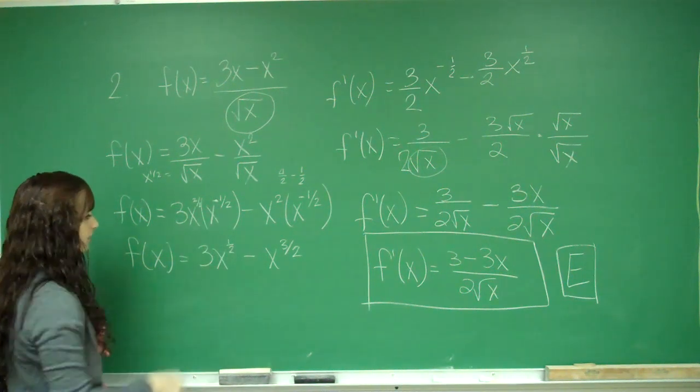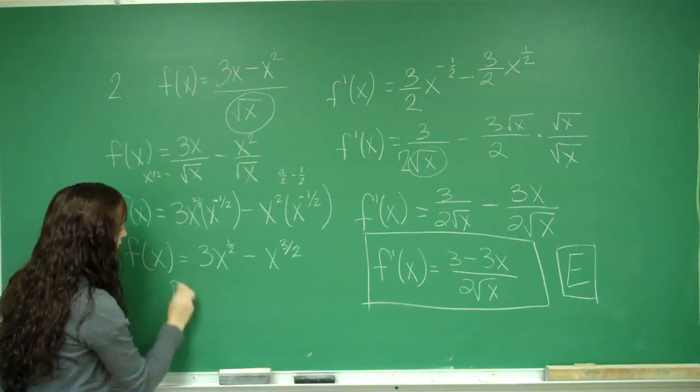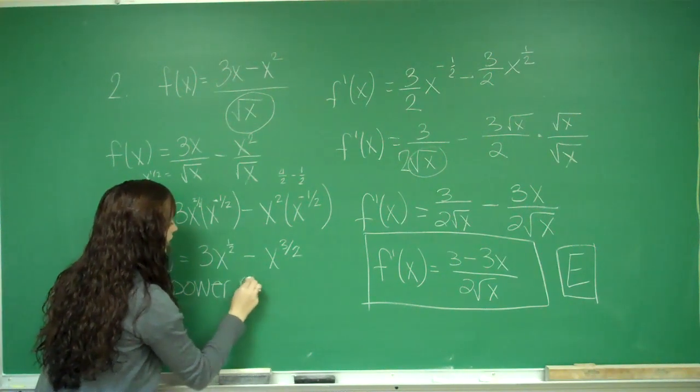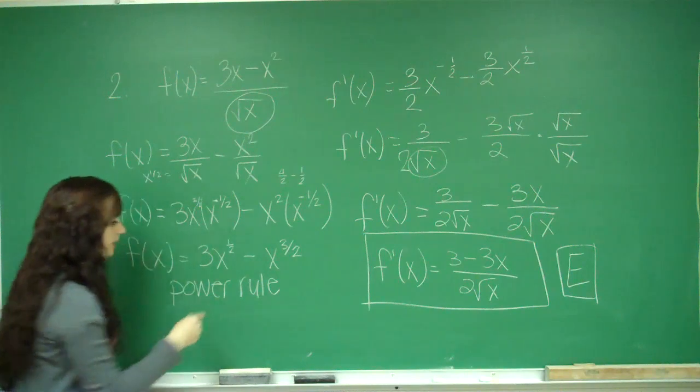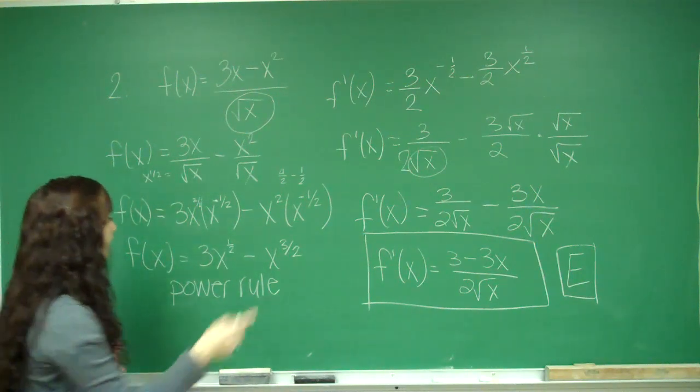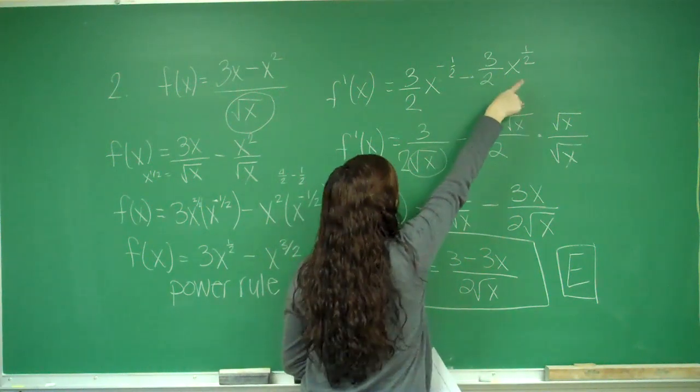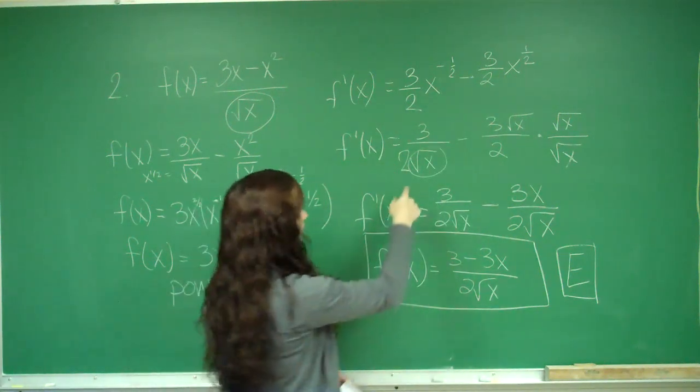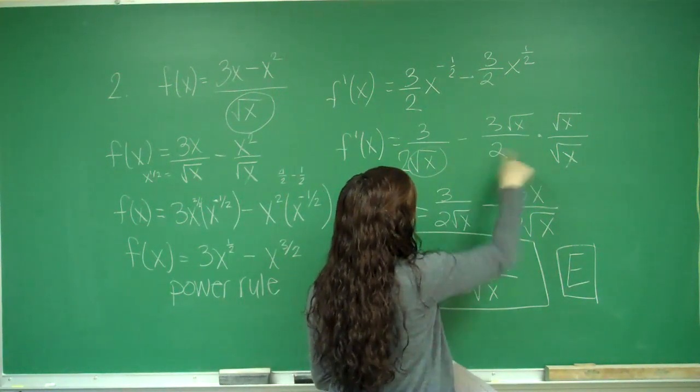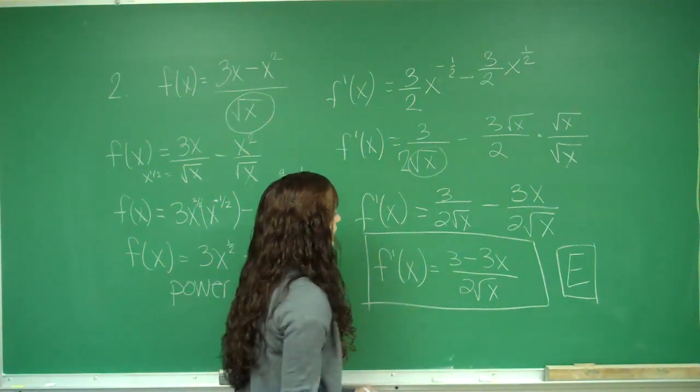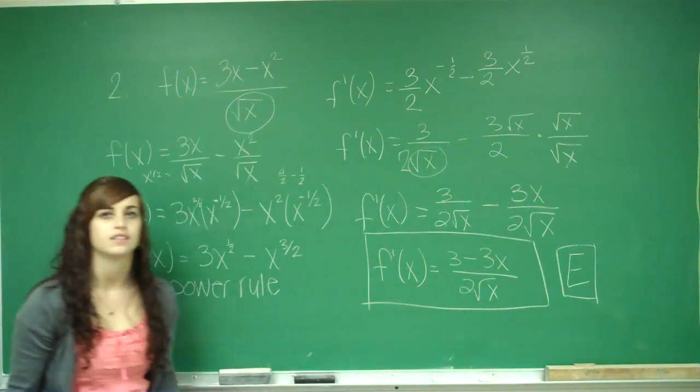I get it into just one function here. And then I use the power rule. That's an easier rule to use than quotient rule. I bring down my power and I subtract one. And then I bring down my power and I subtract one. I rewrite it. I get a common denominator. And then I combine it into my final answer. So this is number two.